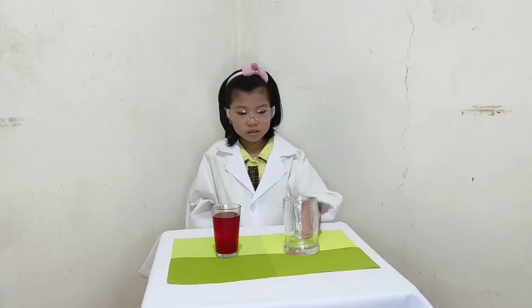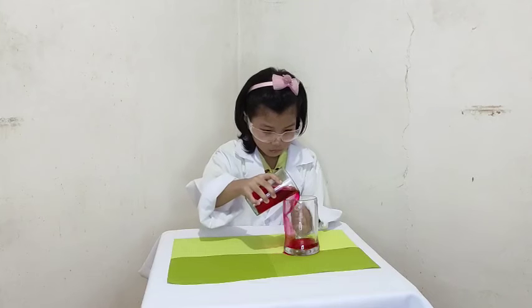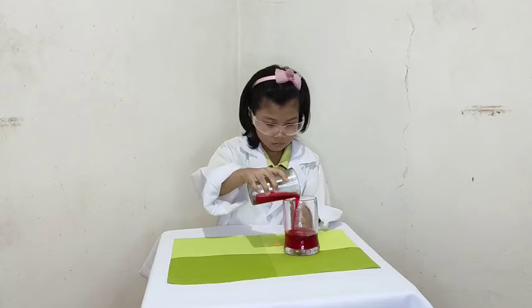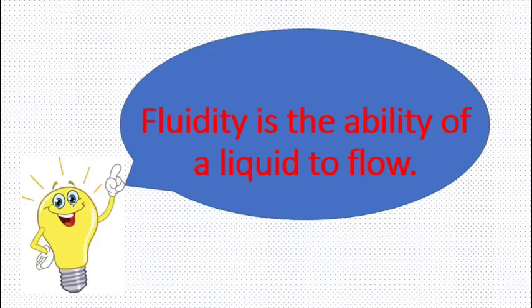Let's do some experiments. I will show you and explain the special properties of liquid. First experiment: we are going to transfer the colored water from this container to another container. This property of liquid is called fluidity. Fluidity is the ability of a liquid to flow.